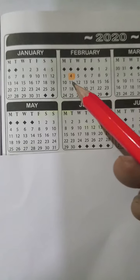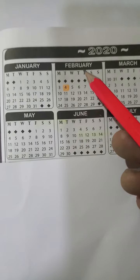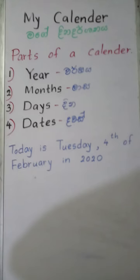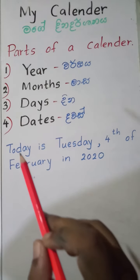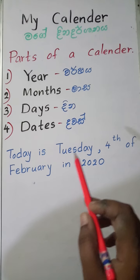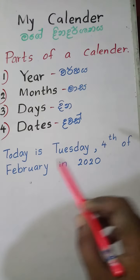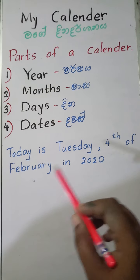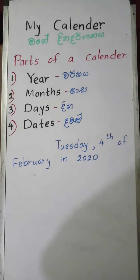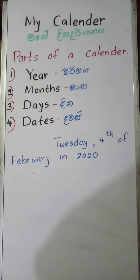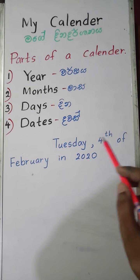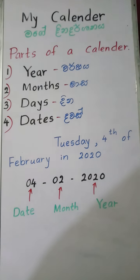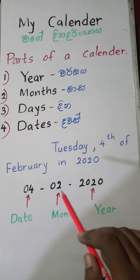Here, I will highlight the date on the calendar. Then I can write that date like this: Today is Tuesday, 4th of February, 2020. So that is how you write it in English. You can also write it in short form: 4, 2, 20.